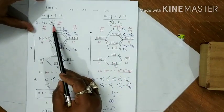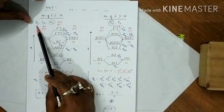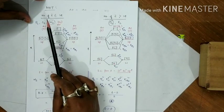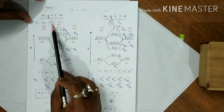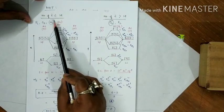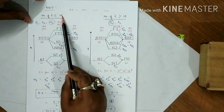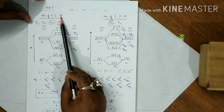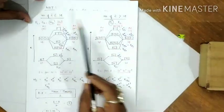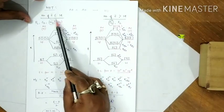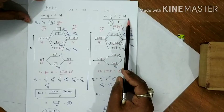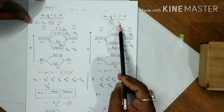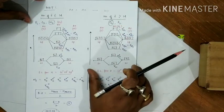In the first category, we have molecules such as B2, C2, and N2. Nitrogen has a total of 14 electrons — each nitrogen atom has 7, so N2 has 14. If the total number of electrons is greater than 14, such as in oxygen and fluorine molecules, we use the second diagram.